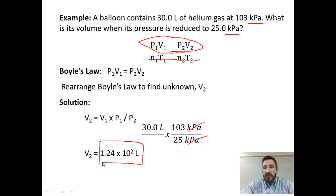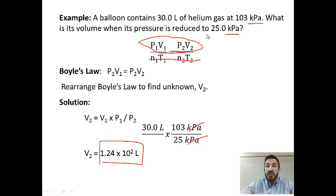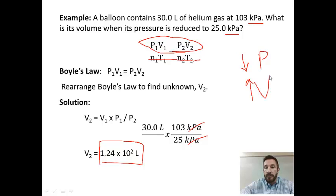You want to think about this conceptually. The pressure was decreased. With Boyle's Law, pressure and volume are inverse, so if pressure decreases, we should have an increase in volume. If you get a number that doesn't get bigger, you probably did something wrong in your calculation. That's how you solve a Boyle's Law problem.